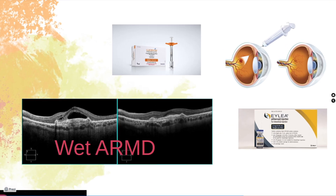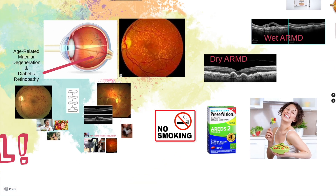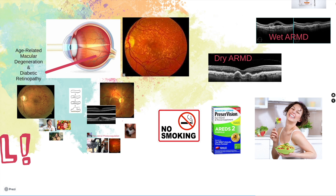If you have wet age-related macular degeneration, you have leaking blood vessels in the eye, and so we need to do injections to control that. That's a crash course on age-related macular degeneration.